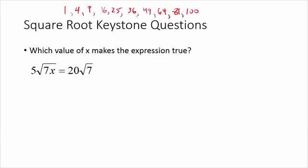Here's a different type of question — another popular Keystone type. It asks which value of x makes the expression true. We have 5 root of 7x on one side, and 20 root 7 on the other. Notice we have a five on the outside that became a twenty. Something must have come out of the radical and multiplied five by four to give twenty. Since the seven on the inside is the same, something under the radical gave us a factor of four.